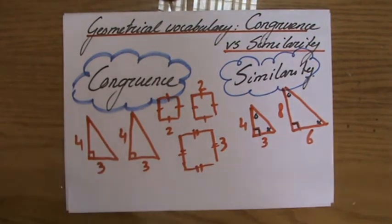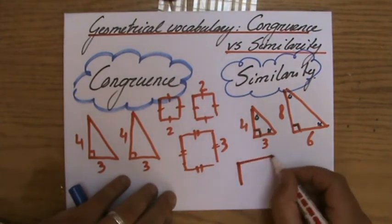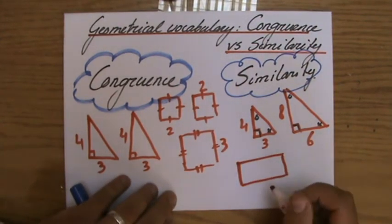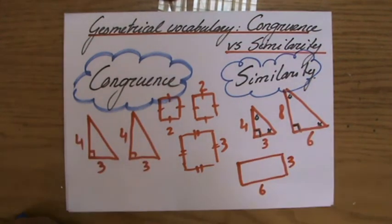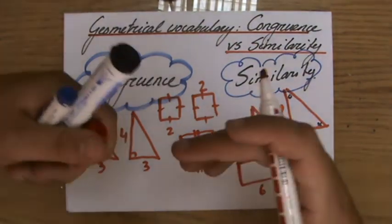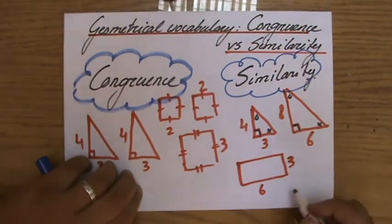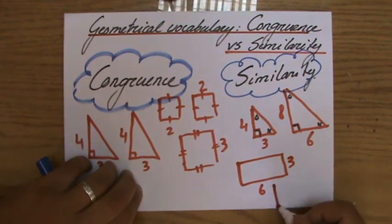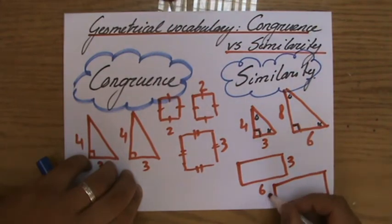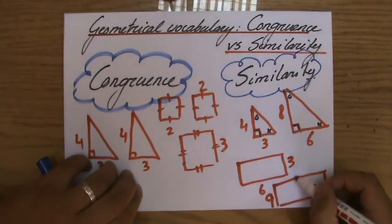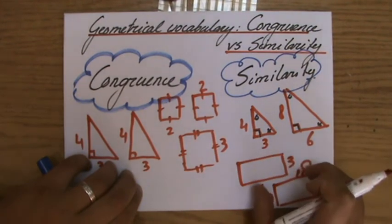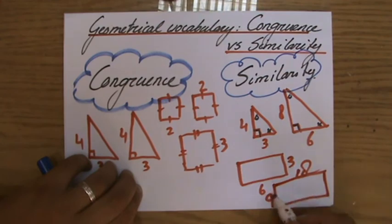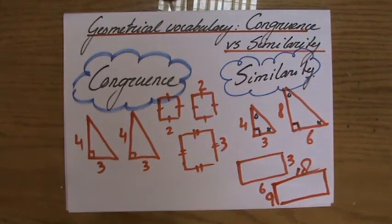Let me give you one more example of similarity. Let's say I have a rectangle, 3 and 6, then a congruent rectangle needs to also be a rectangle of 3 by 6, but a similar rectangle could be a rectangle of 9 by, what do you think, 18. Because it's 3 times as much, so 6 times 3, 18. That is a similar rectangle.